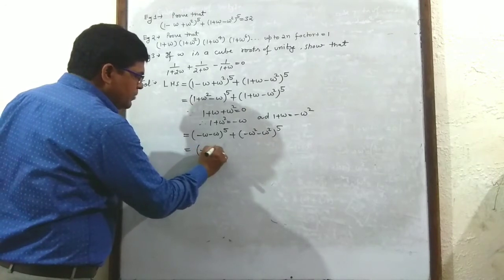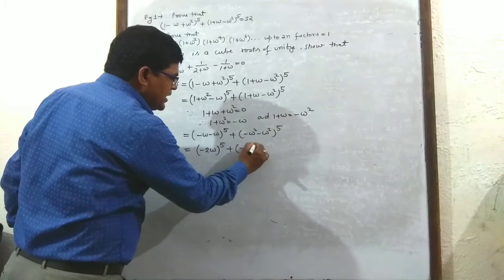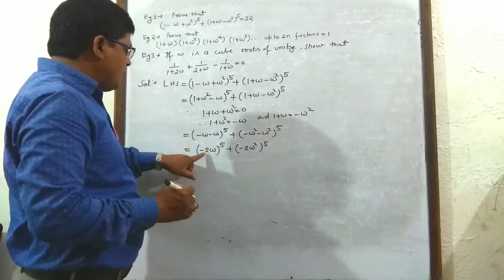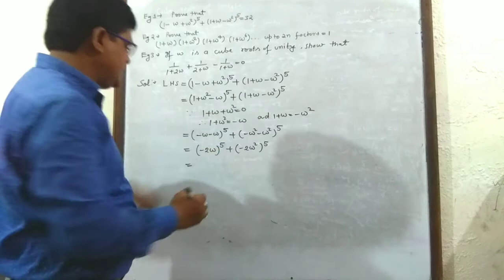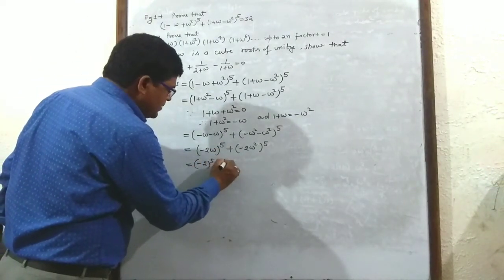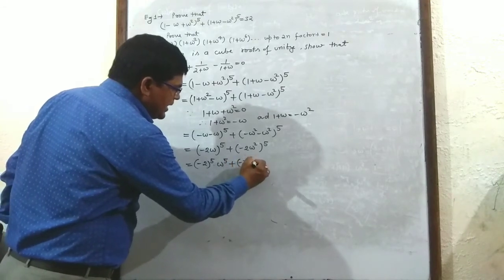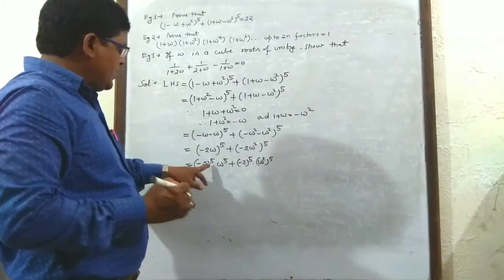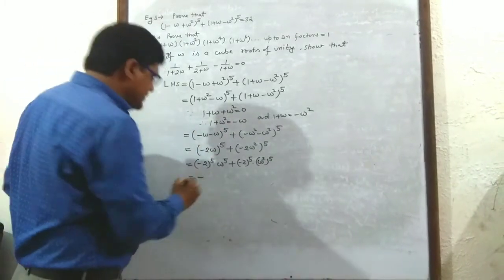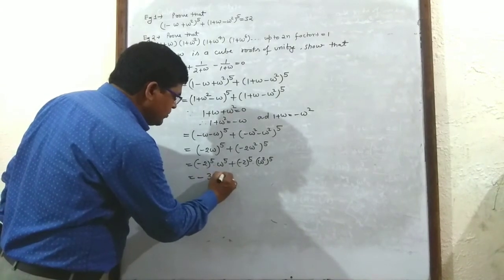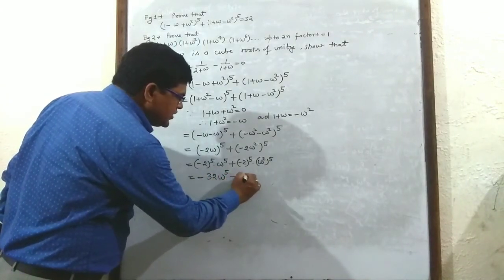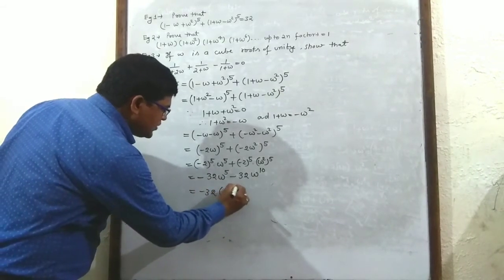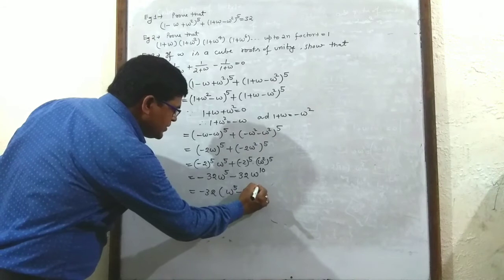That is (-2ω)⁵ + (-2ω²)⁵ = (-2)⁵·ω⁵ + (-2)⁵·(ω²)⁵ = -32·ω⁵ - 32·ω¹⁰. Taking -32 common: -32(ω⁵ + ω¹⁰).